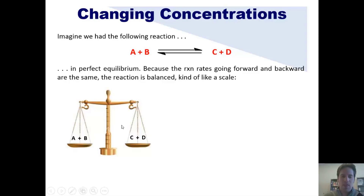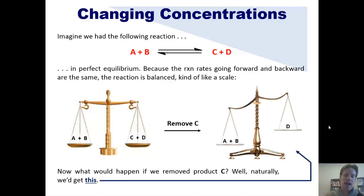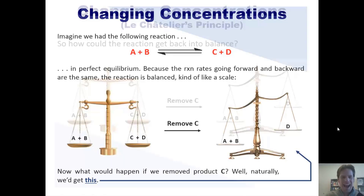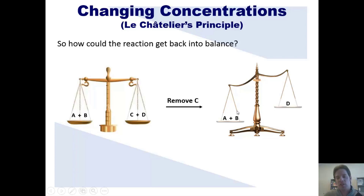The reason I'm showing you this on a scale is to use it as a teaching tool to help you visually see what Le Chatelier's principle actually does. So ask yourself: what would happen if we removed C? Well, the scale would of course tip to the left. So how could you get the reaction back into balance? The way you do that is by making more C — that is, A and B could convert over to form more C and D, and in turn decrease the amounts of A and B until you restored balance.